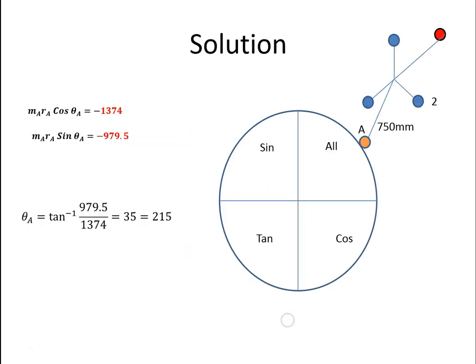This is negative and this is negative. So the only place where that happens is in this quadrant. If I get the inverse tan of that, I get 35 degrees. But we've been measuring the angles from here. So 35 plus 180. So this value here works out to be 215 degrees.